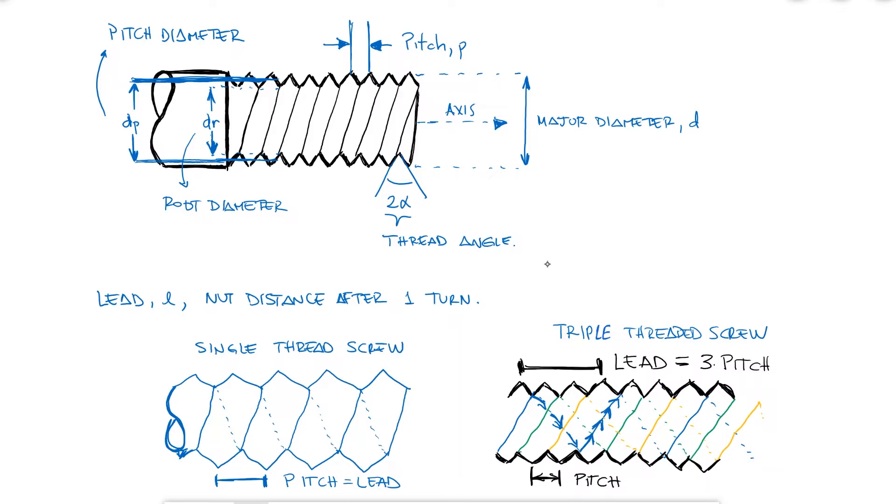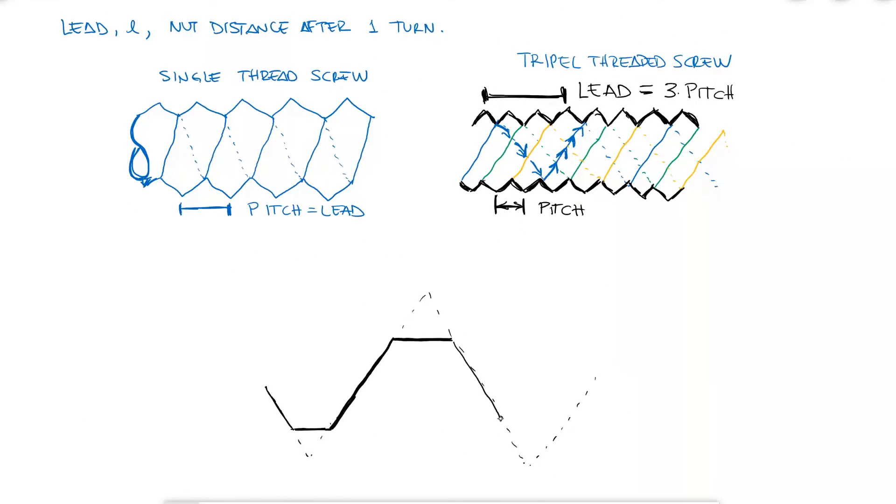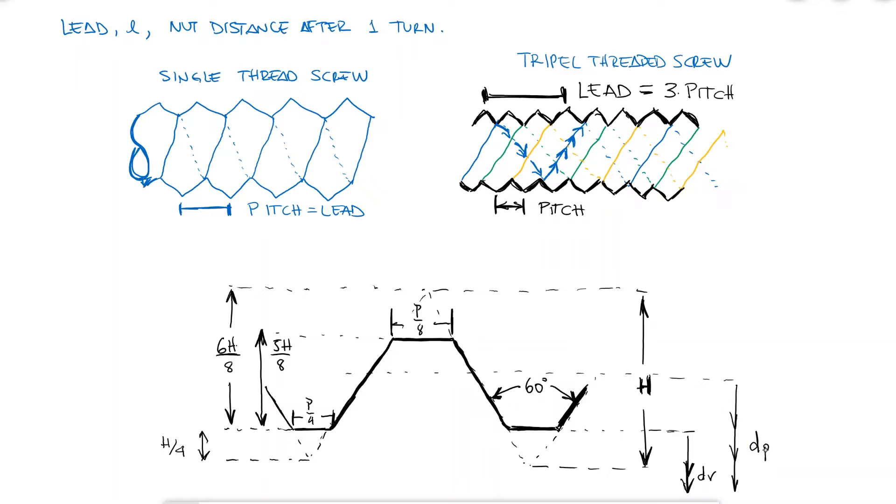The sharp V thread seen in this drawing is only used to more easily explain the terminology of screw threads. During the forming operation, the crests and roots are usually flattened or rounded with several dimensions following specific rules depending on the profile M, MJ, UN, UNR.